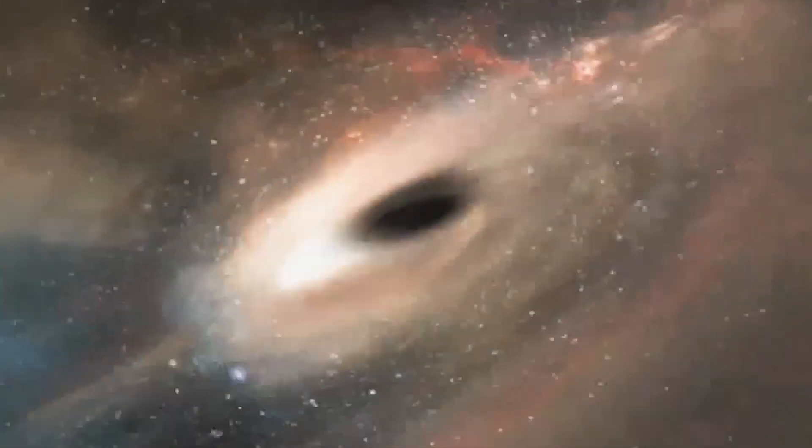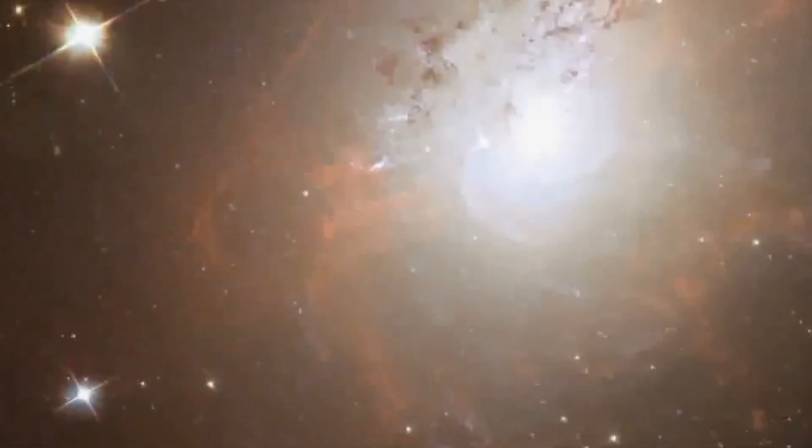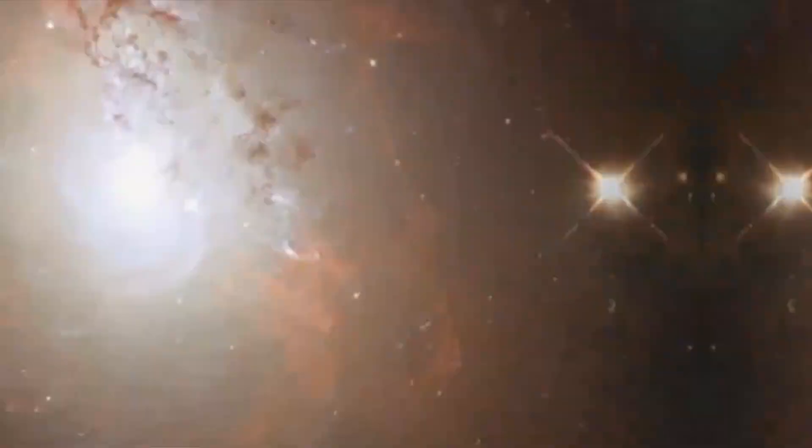A hypernova, sometimes called a Collapsar, is a particularly energetic core collapse supernova. Scientists think that a hypernova occurs when stars more than 30 times the mass of the Sun quickly collapse into a black hole. The resulting explosion is 10 to 100 times more powerful than a supernova.